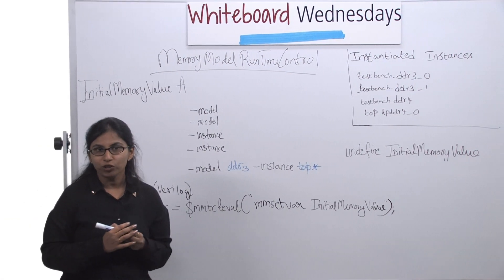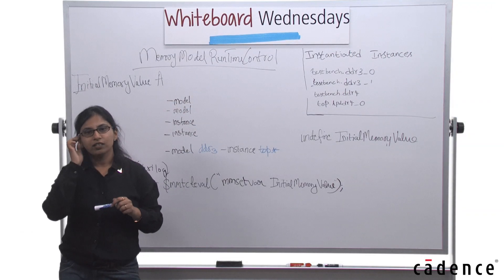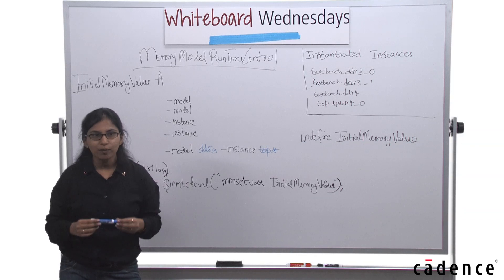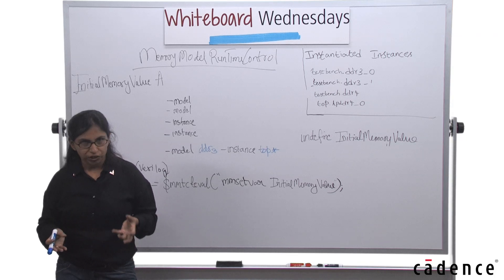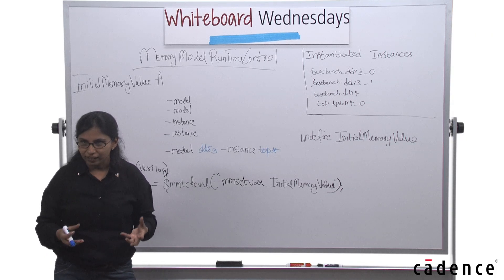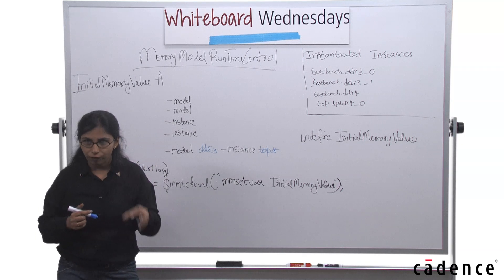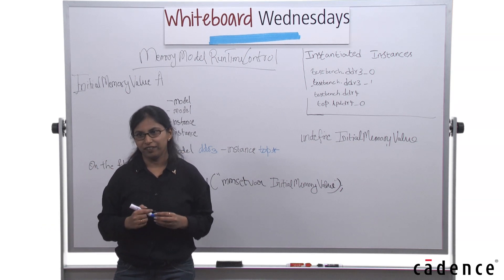My whiteboard topic is memory model runtime control. So what is this? Basically, you can control the behavior of any memory model during the simulation using certain global switches, which are called .denali-rc switches, and these are specified or referenced in a file called .denali-rc file. So this .denali-rc file is something that you can have in your working simulating directory.